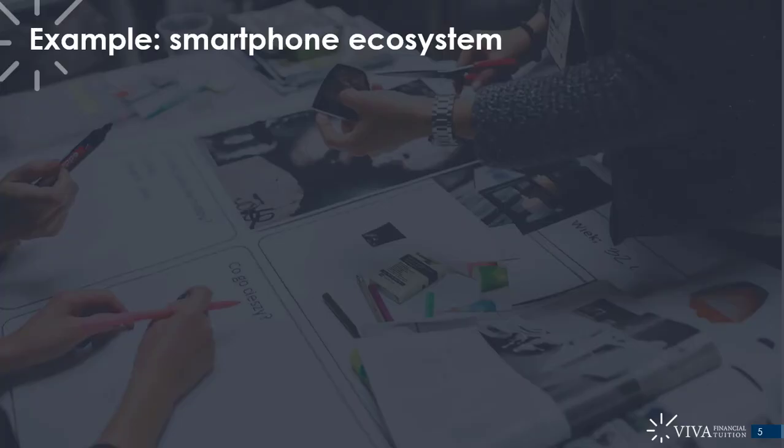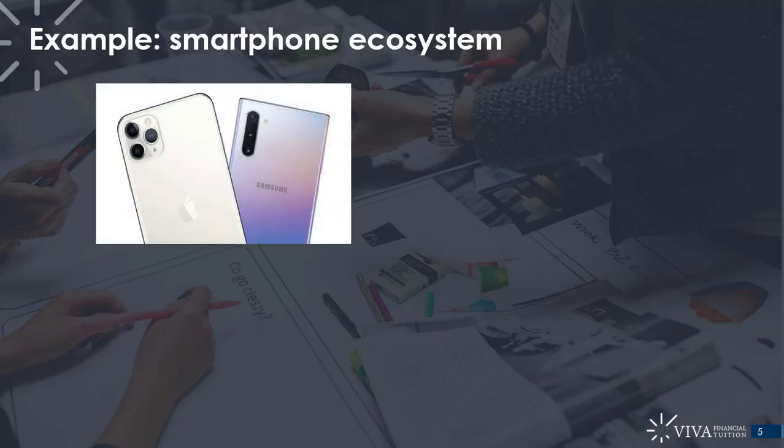Let's look at an example: the smartphone ecosystem. In a traditional market, you would think of buyers and sellers, with a linear industrial chain of supply, distribution, logistics, and marketing serving the final customer. However, in the case of ecosystems, we're dealing more with networks — very complex networks with lots of interdependencies and non-linear relationships. For example, in the smartphone industry, you have companies like Samsung and Apple with a huge network of suppliers, distributors, logistics, sellers, and end consumers.